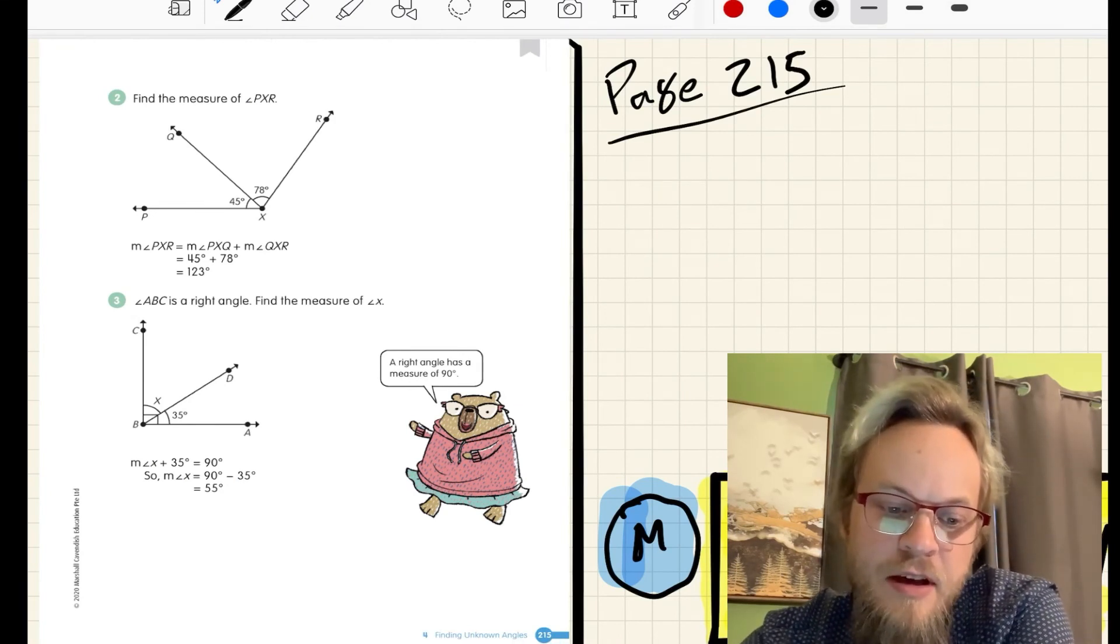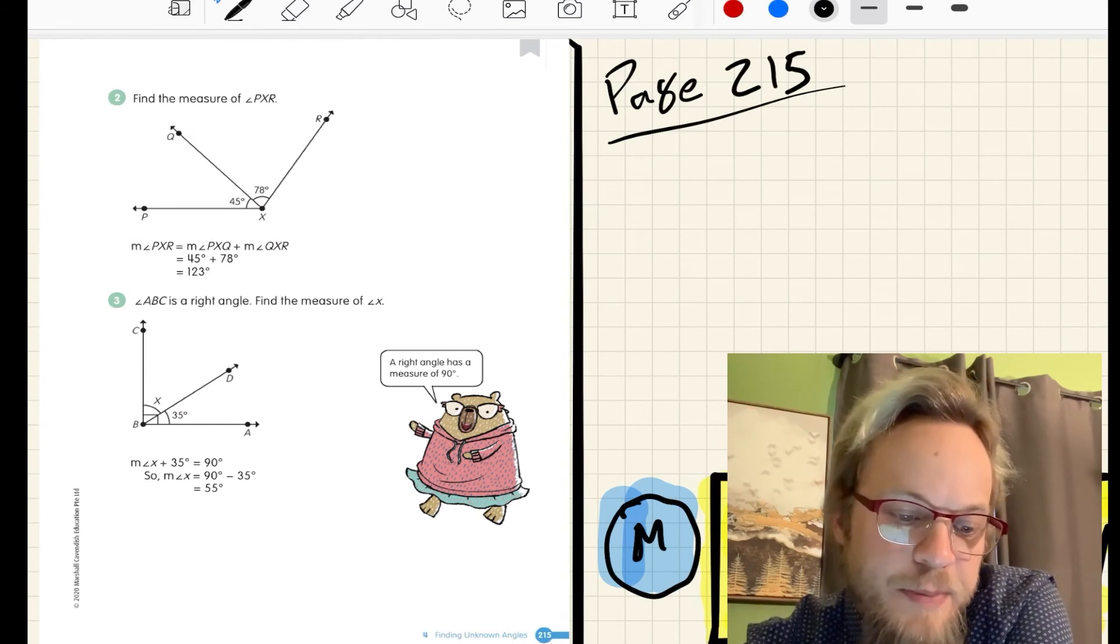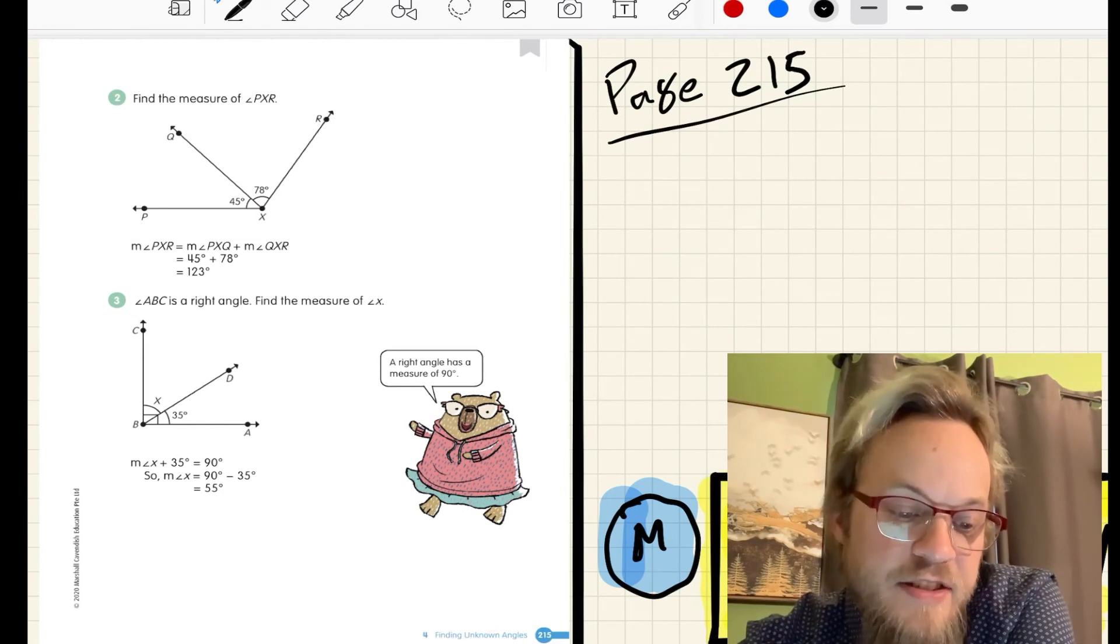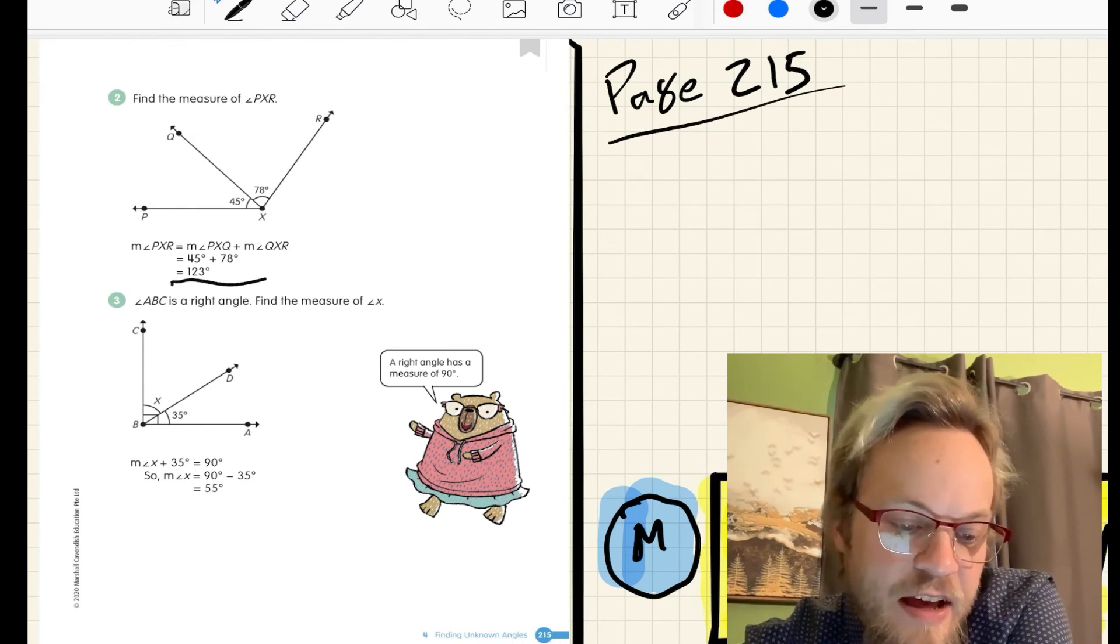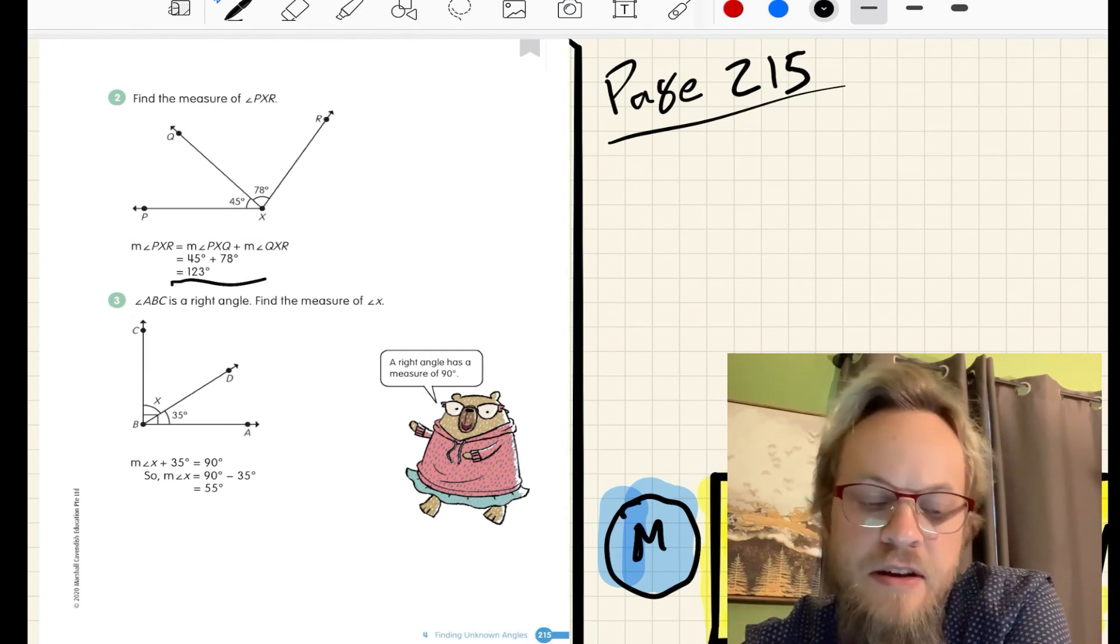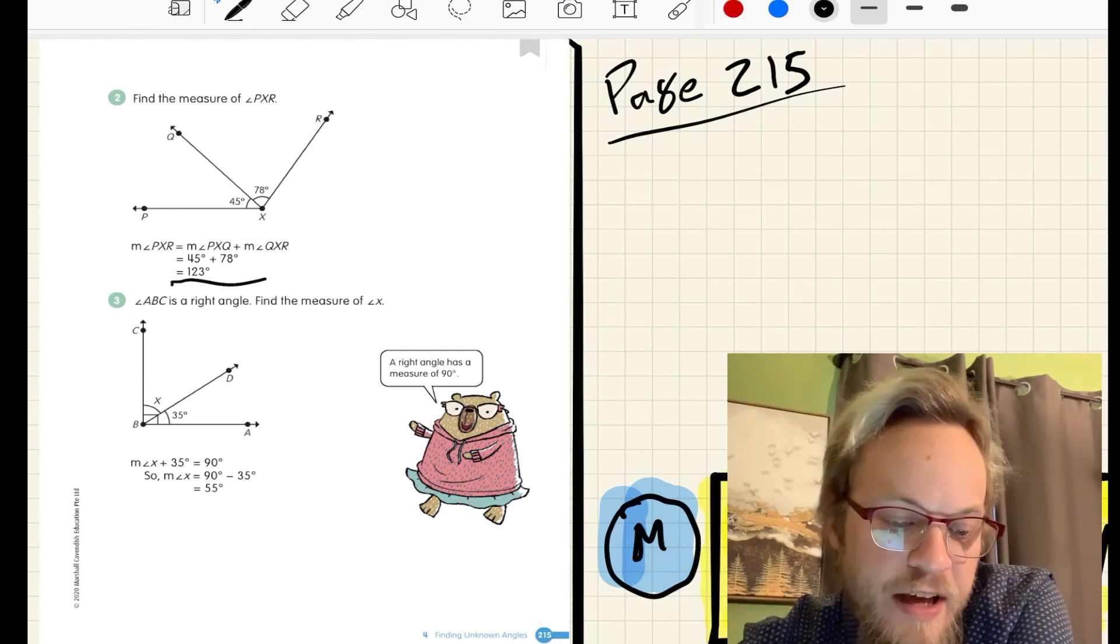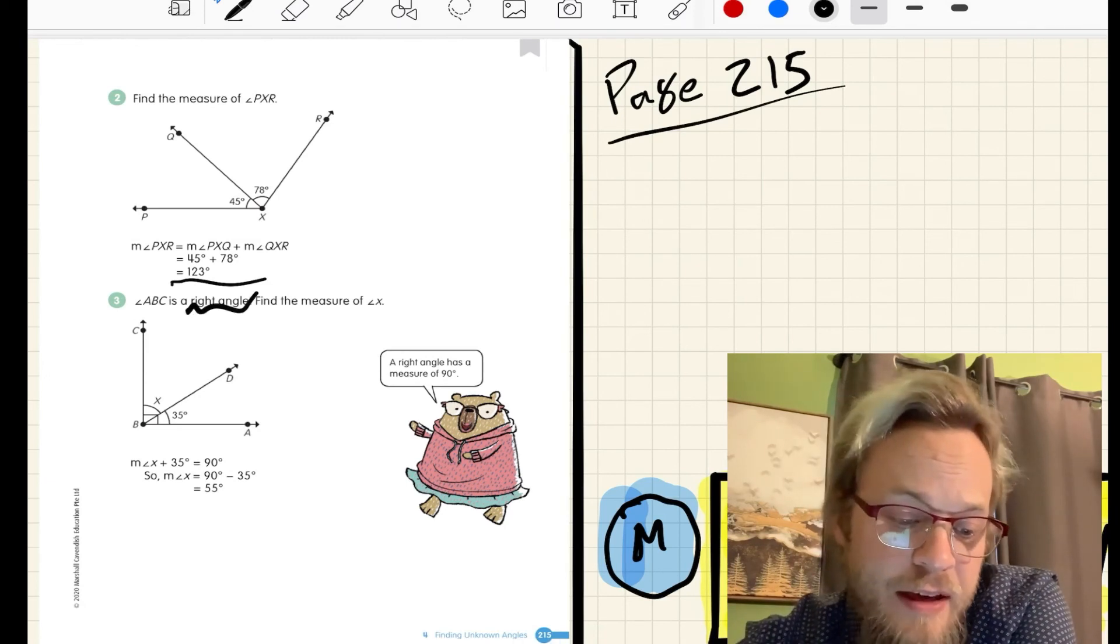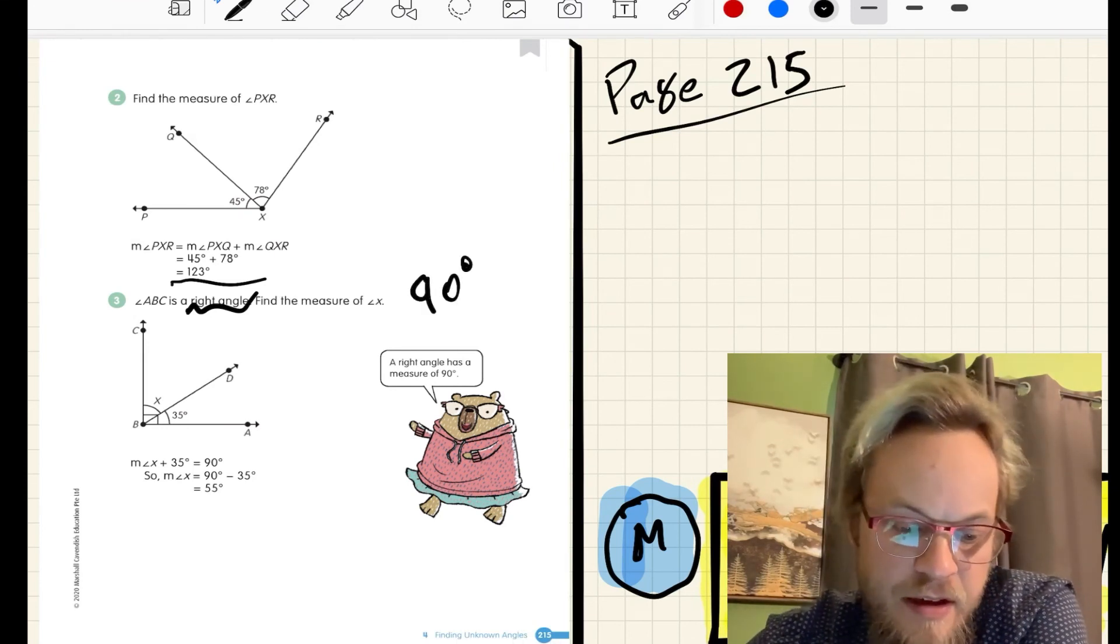Two more problems. Here we have PXR, which is a combination of PXQ and QXR. PXQ is 45 degrees, QXR is 78 degrees, so if you add 45 plus 78, you get 123 degrees. For number three, angle ABC, the full outside, is the right angle, so we know that it's 90 degrees.